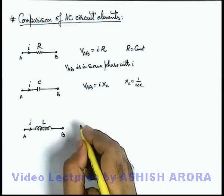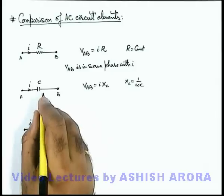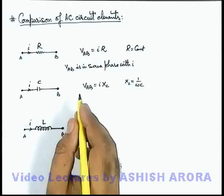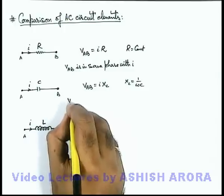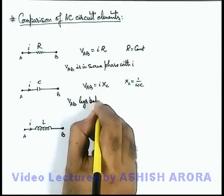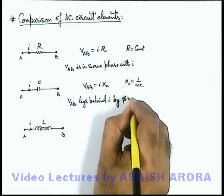In case of capacitor, we know well that the potential difference across a capacitor lags behind the current by a phase angle π/2. So we can write V_AB lags behind i by φ = π/2.